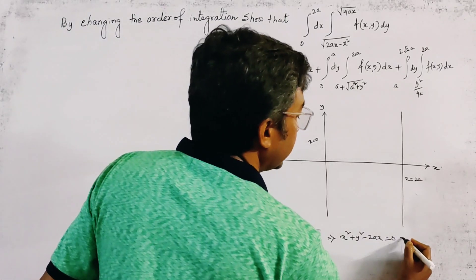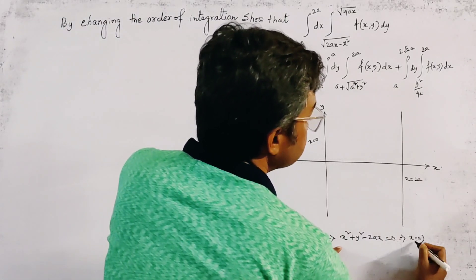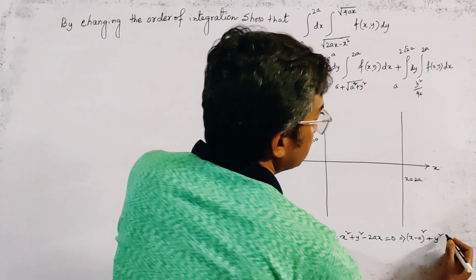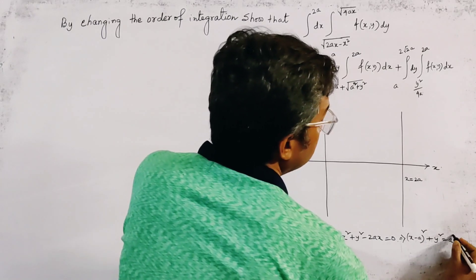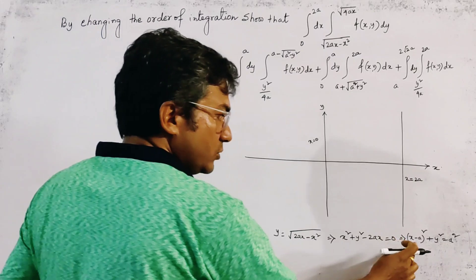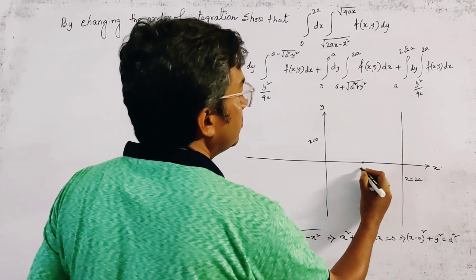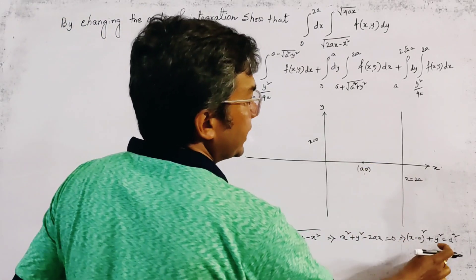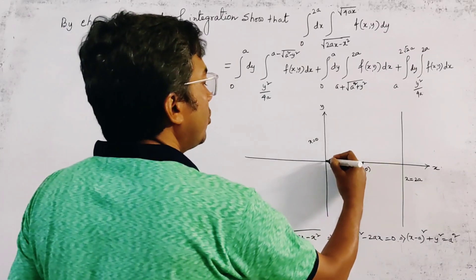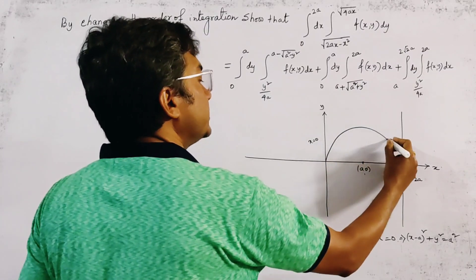We rewrite this circle as (x - a)² + y² = a². This is a circle with center (a, 0) and radius a. We draw only the positive side of this circle, which forms the lower range of the second iteration.